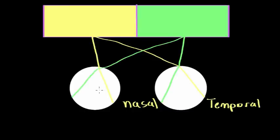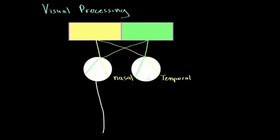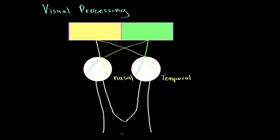The eye is connected to the brain via the optic nerve, which exits the back of the eye and goes into the brain. Interestingly, the optic nerves from both eyes actually converge at a single point. This point where they converge is known as the optic chiasm. They converge there and then break off again, moving deeper into the brain.